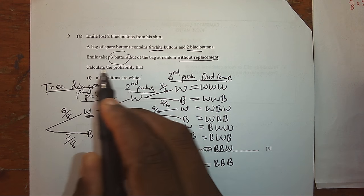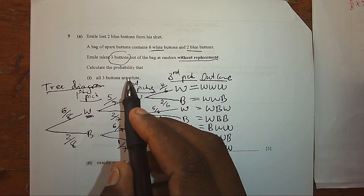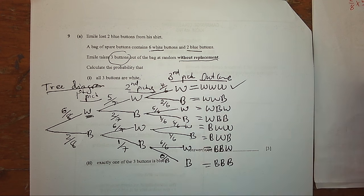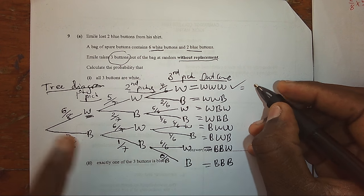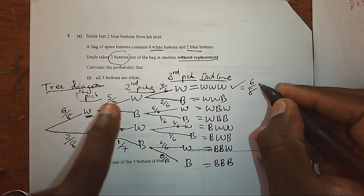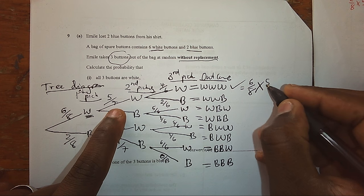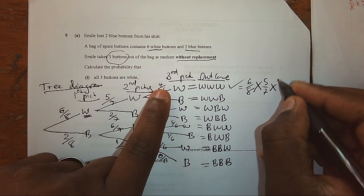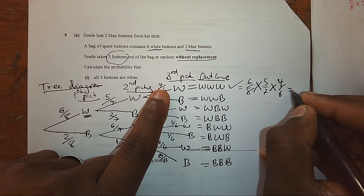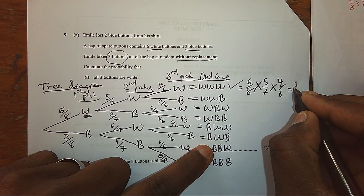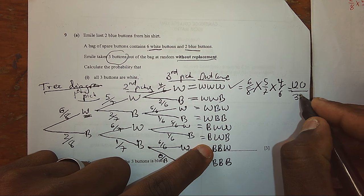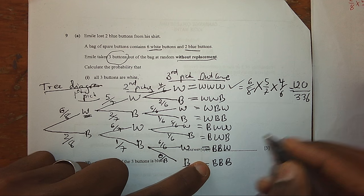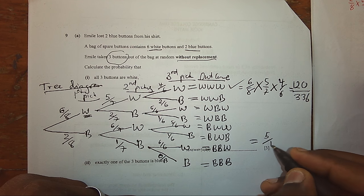Now, in our question, they're asking us to find all three buttons are white. That means we shall use that option. What are the possible outcomes of this option? That is six over eight, and five over seven, and four over six. Giving us one hundred and twenty over three hundred and thirty-six. We can simplify this to five over fourteen.